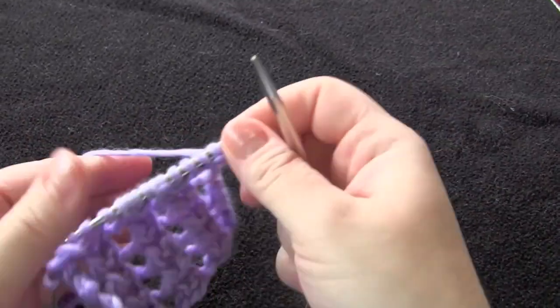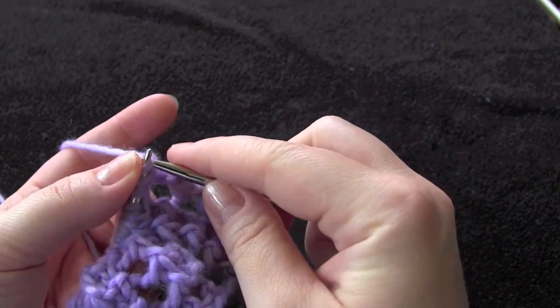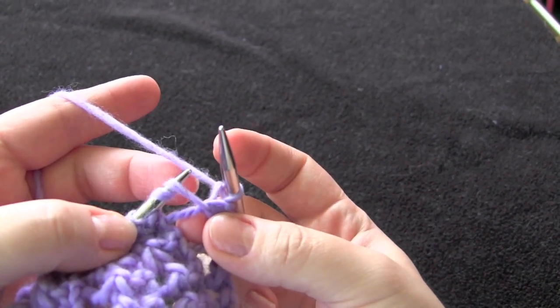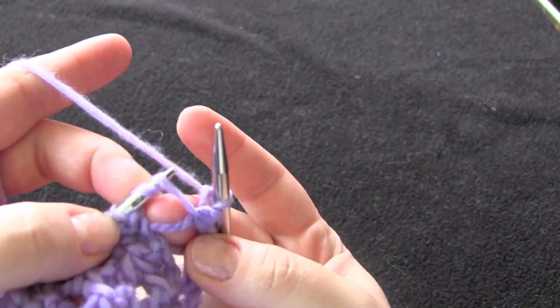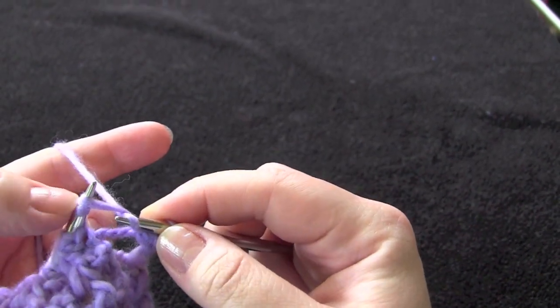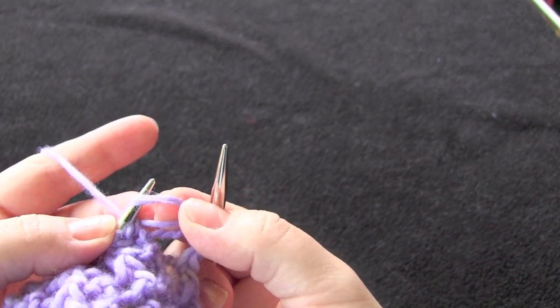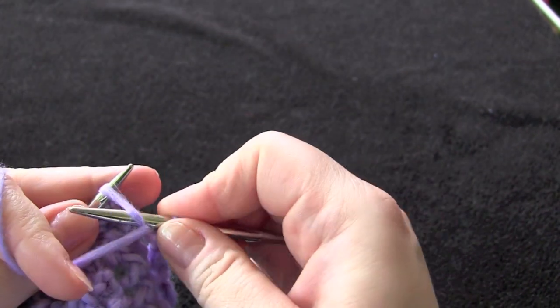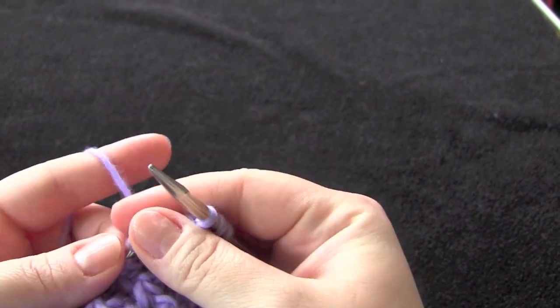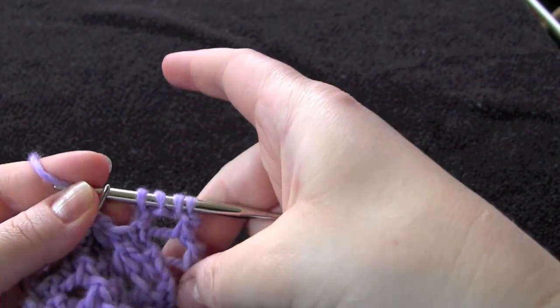In row two, you knit your first stitch, and now we have our double yarn over. What you're going to do is knit and purl into your double yarn over. So you just knit, and I just push that first strand off of my left needle. You still have one around your needle here. Bring your yarn to the front of the work, and then purl. And then drop that off the left needle. And now you're going to knit one, and that is your stitch repeat.